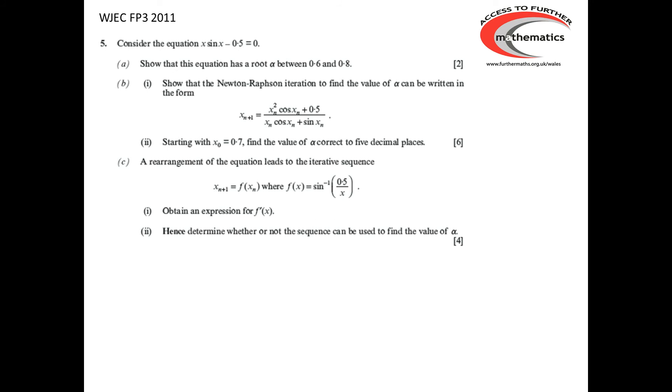We will see all of these key facts in use when we look at this example that comes from the 2011 paper. So first of all we have to show that the equation x sin(x) - 0.5 = 0 has a root between 0.6 and 0.8. So if I let g(x) equal x sin(x) - 0.5, the only reason I'm using g rather than f is that later on in the question there's a function f coming up which is different from this function, so it's simply to avoid confusion later on. So letting g(x) = x sin(x) - 0.5,